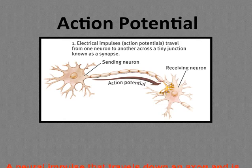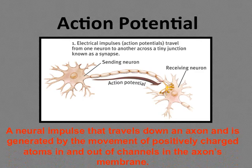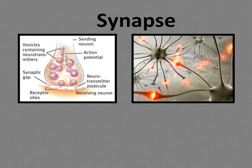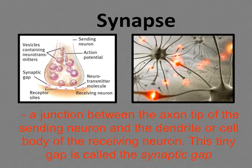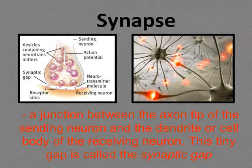An action potential is a neural impulse that travels down an axon, generated by movements of positively charged atoms in and out of channels in the axon's membrane. Simply put, when an action potential occurs, a message is sent to neighboring neurons. The synapse is the tiny gap — less than a millionth of an inch wide — between the axon tip of the sending neuron and the dendrite or cell body of the receiving neuron. This gap is called the synaptic gap. The dendrites and axons of two neurons don't quite touch, and neurons send chemical messengers called neurotransmitters across the synaptic gap.